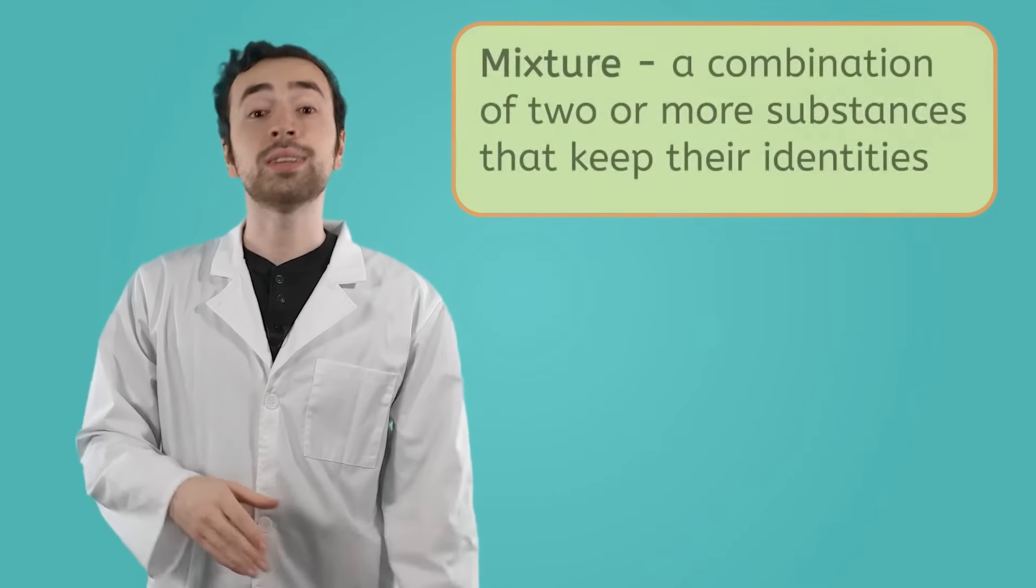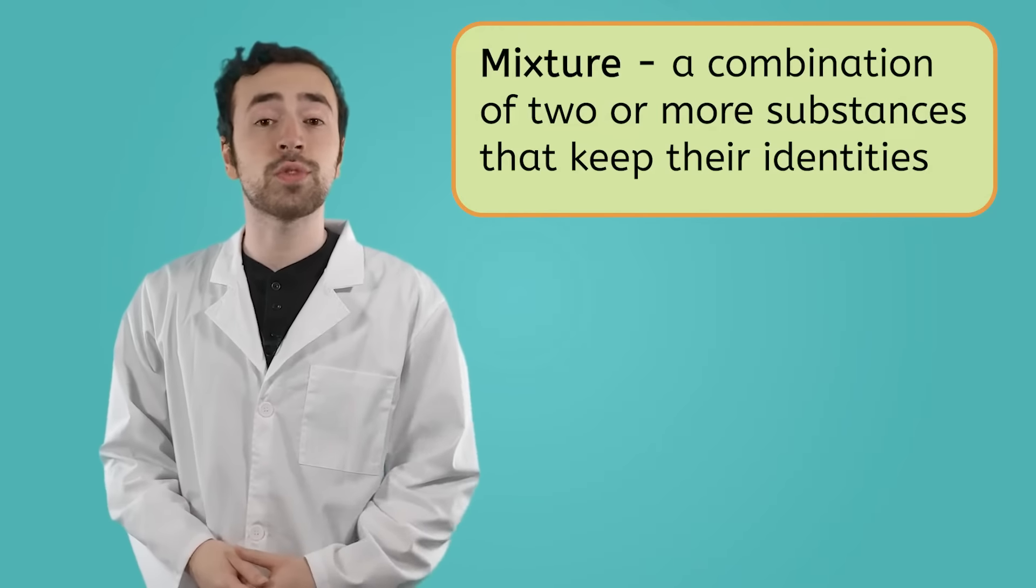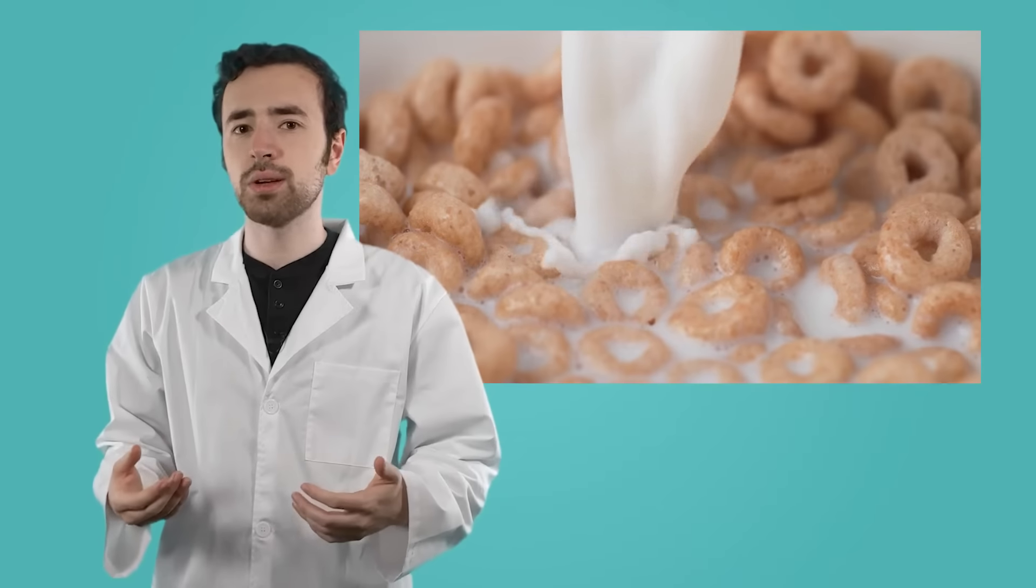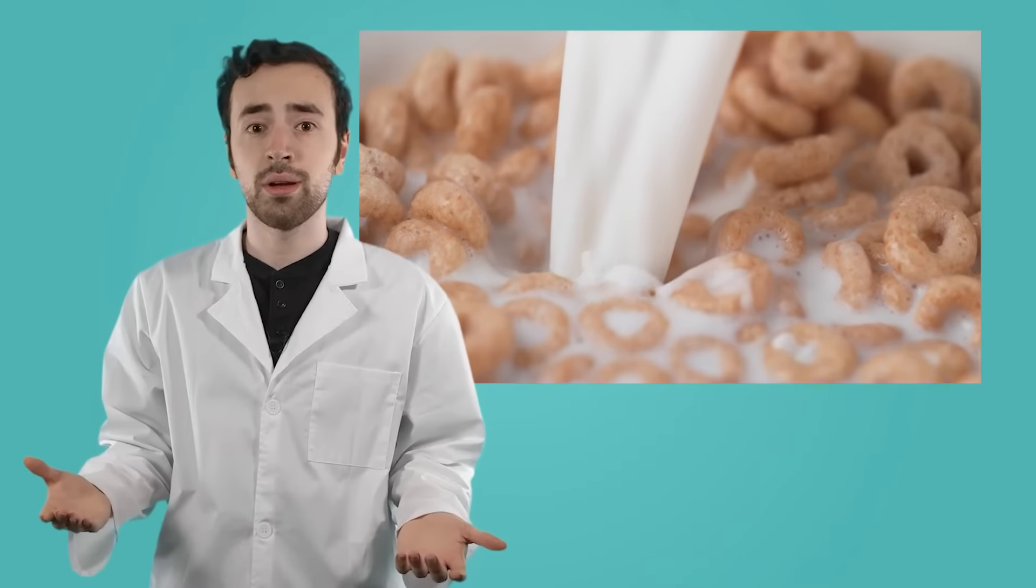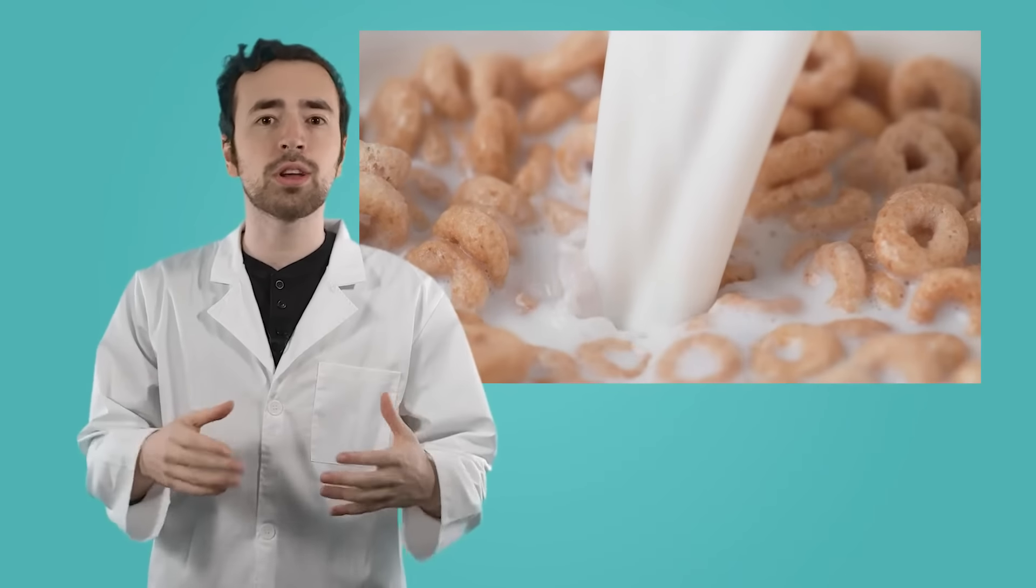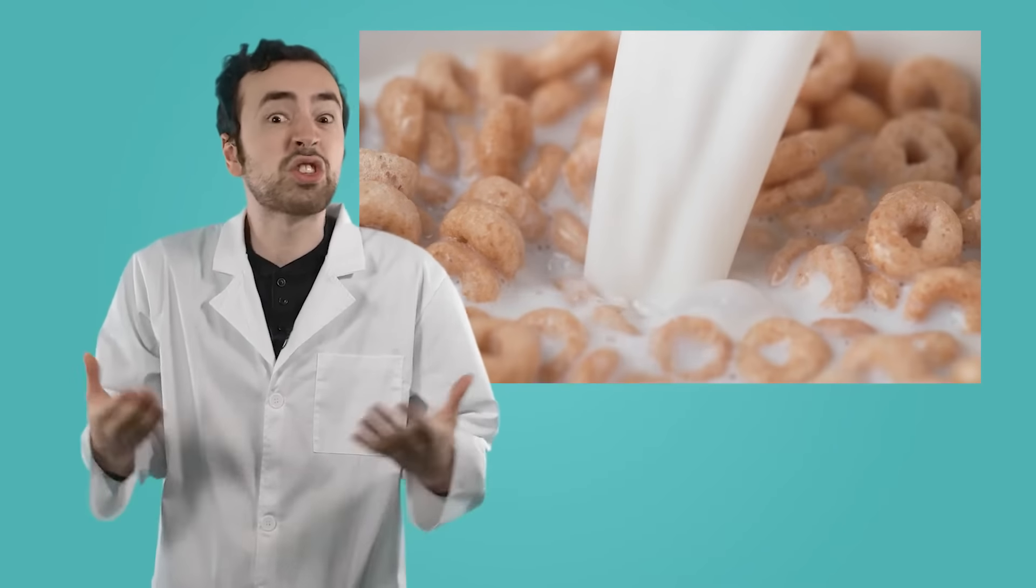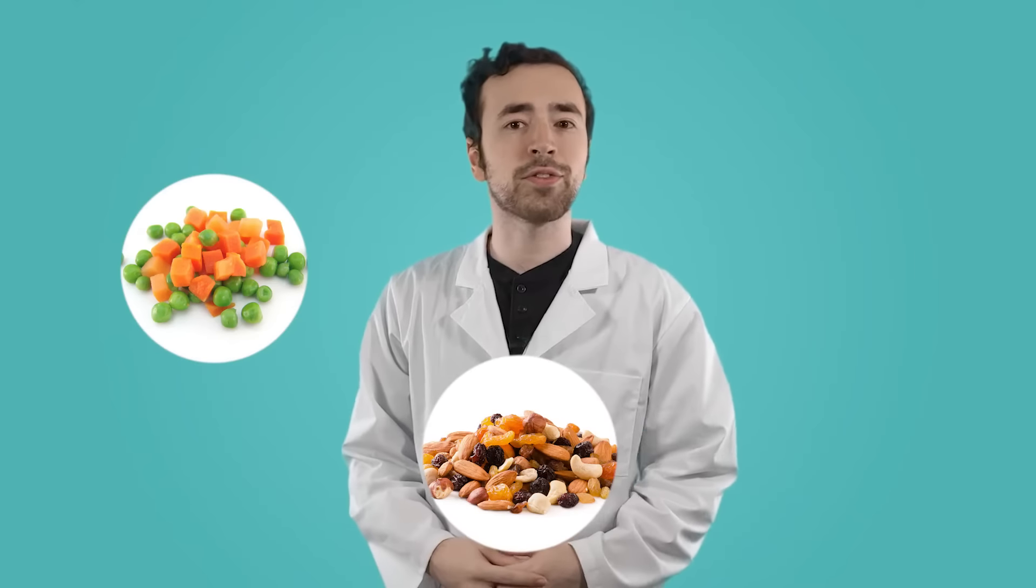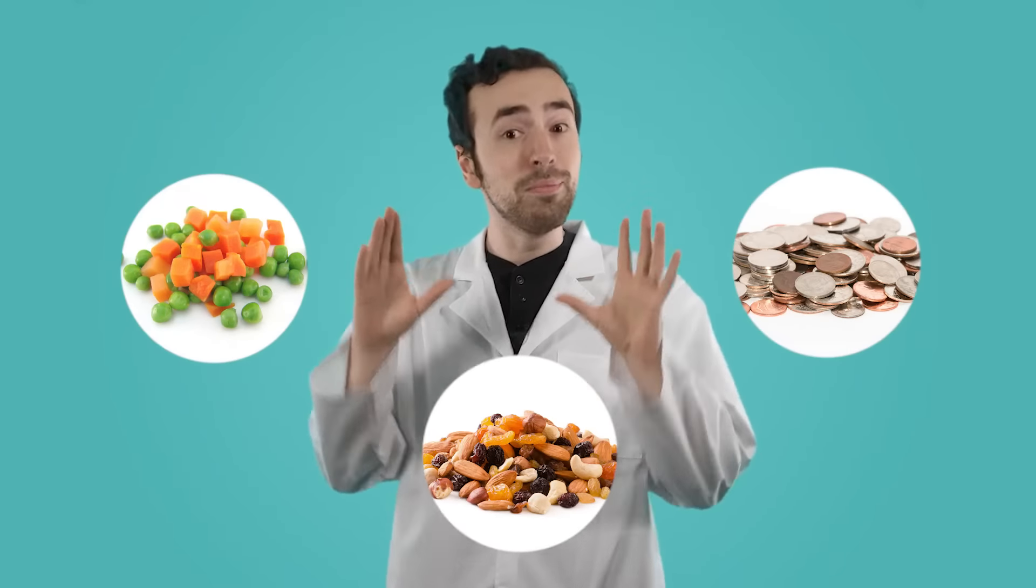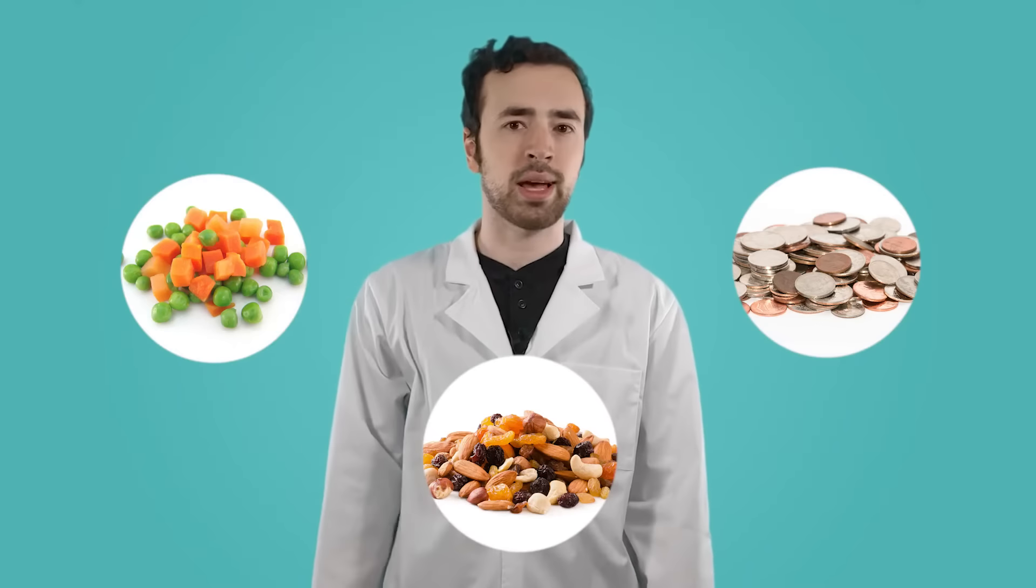A mixture is a combination of two or more different substances that each keep their identities. For instance, whenever you combine cereal and milk, you're making a mixture. And you can also clearly see that the cereal and milk keep their identities. They're still cereal and milk. The same goes for when you combine peas and carrots, nuts and dried fruit, and nickels, dimes, and pennies. These are all mixtures! Just please don't eat that last one. Please.